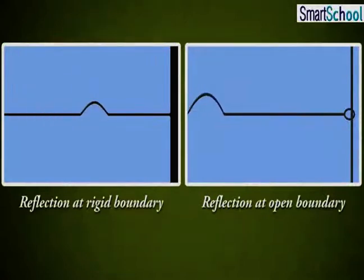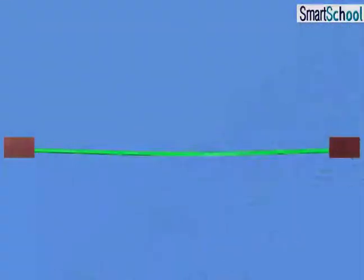In the earlier module, we considered reflection of waves at one boundary. But there are situations in which reflection takes place at two or more boundaries. Let us understand those scenarios by an example of a string.